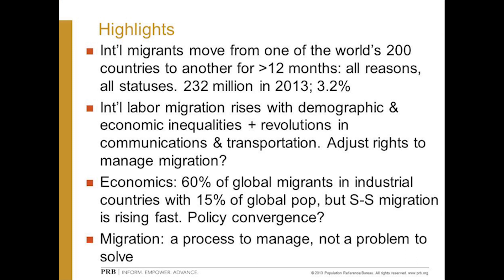First, a definition. An international migrant, according to the United Nations, is someone who moves from one of the world's 200 countries to another for at least 12 months. It doesn't matter why you move or what status you have. The UN estimates there were about 232 million international migrants in 2013 — a little over 3% of the world's people.